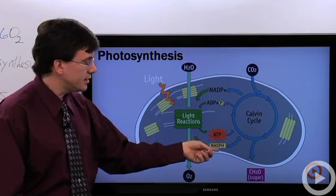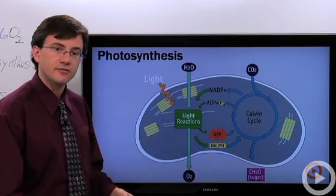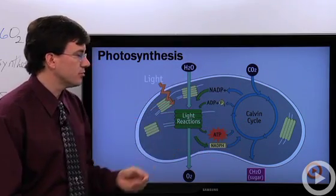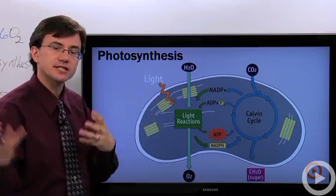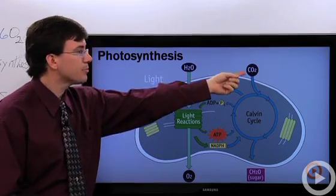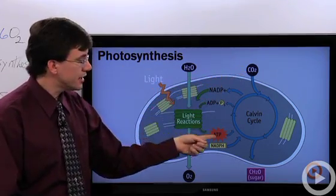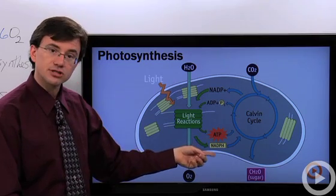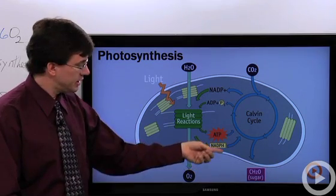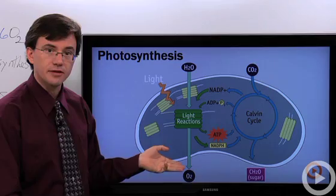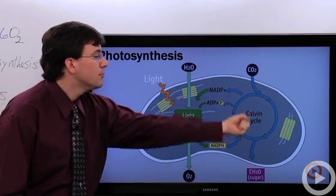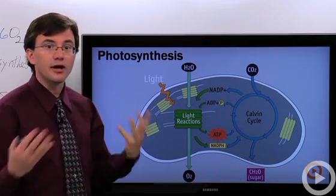Now the ATP and NADPH are sent off to the Calvin cycle. That is happening in the stroma. In the stroma, you've got all these enzymes floating around. They grab carbon dioxide. Then using the energy of ATP and the high-energy electrons of NADPH and the hydrogens that are being carried on the NADPH, they build glucose or other sugars.